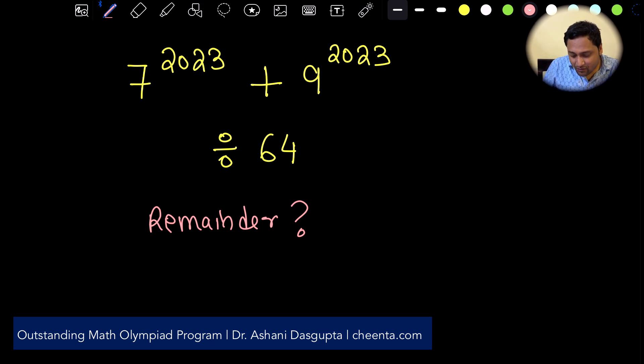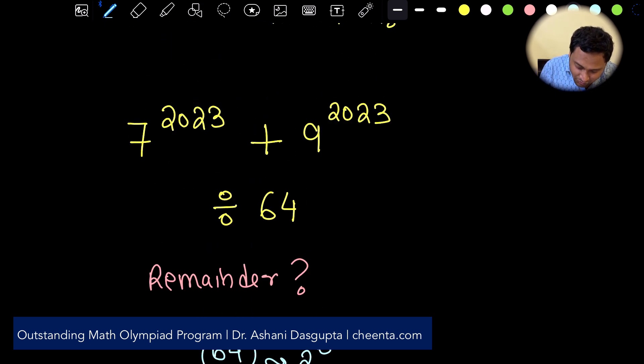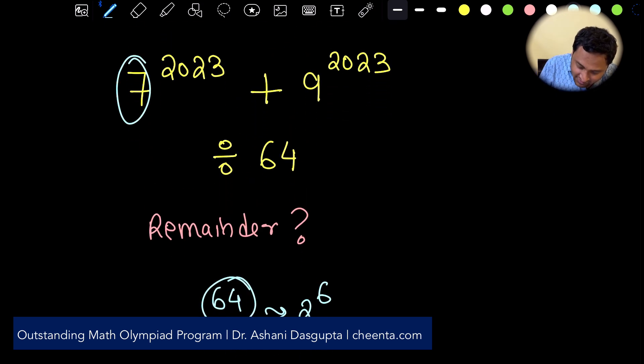So what is 7 to the power 2023 plus 9 to the power 2023 divided by 64? What is the remainder? So to get started I'll give you the simplest thing that you can do. So first look at the number 64. What immediately should strike you is that it's a power of 2, 2 to the power 6. And the other two numbers 7 and 9 these are incredibly close to another pure power of 2 that is 8.